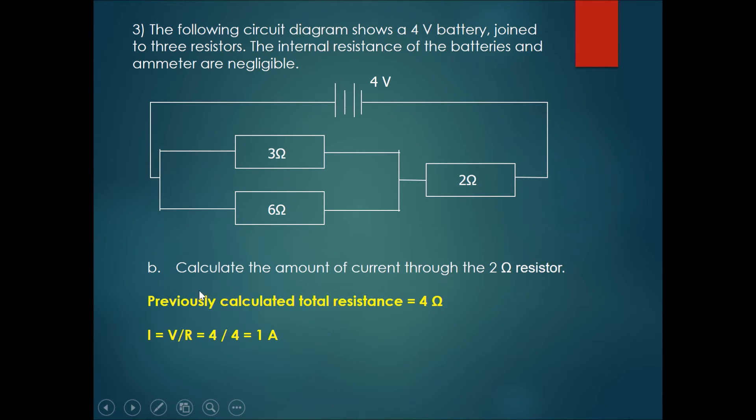So the previously calculated total resistance is 4 ohms. So the current coming out of the battery will be equals to V over R. V over R which is 4 over 4. So this would be 1 ampere.